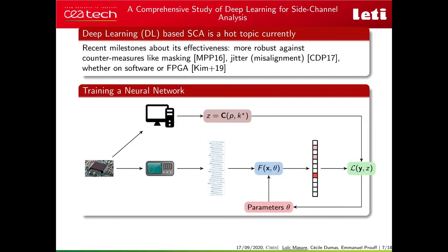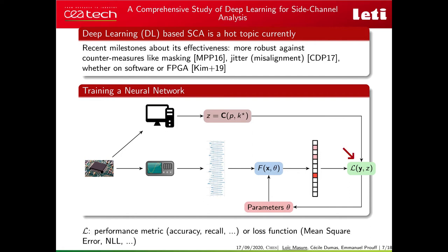How do we train a neural network? During the profiling phase, profiling traces are given to model F parametrized by θ. For each trace, it outputs a score vector — one score per hypothetical value — and we compare these scores with the expected sensitive variable z. The higher the score at the correct entry, the better the prediction. We compare expected and actual results via a loss function. Since a higher score for the correct entry means a lower loss, training a neural network consists of minimizing the loss by adjusting θ. The choice of loss function depends on the nature of the problem.